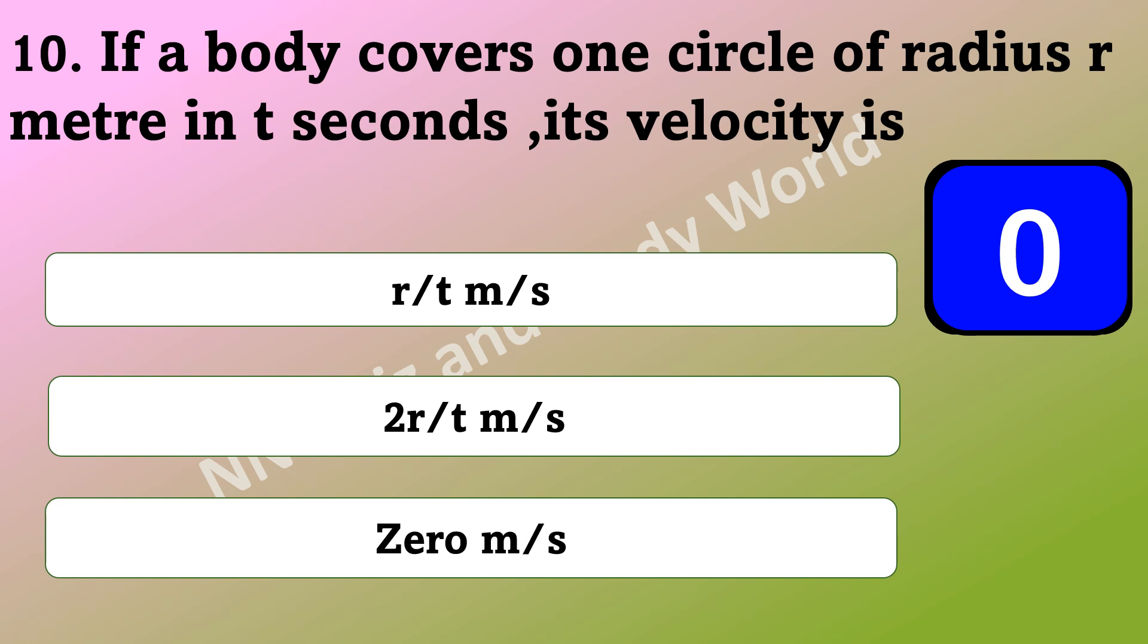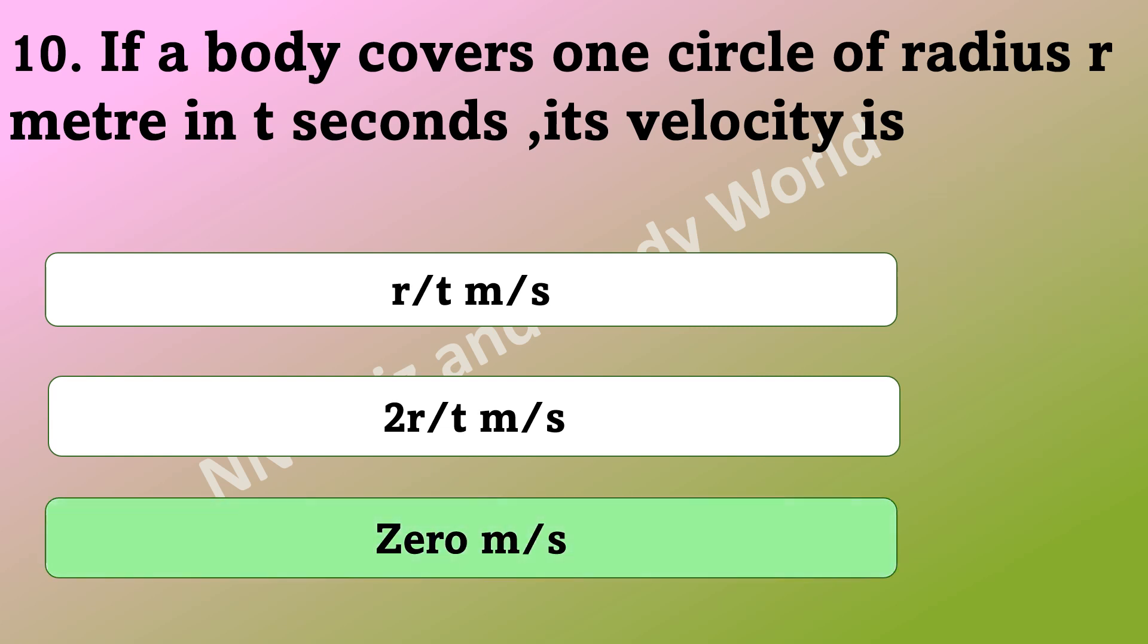What is the velocity if a body covers one circle of radius r meters in t seconds? Is it r by t meter per second, 2r by t meter per second, or 0 meter per second? The answer is 0 meter per second.